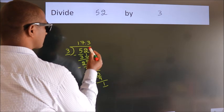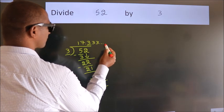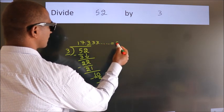That means this number keeps on repeating. So this is our quotient.